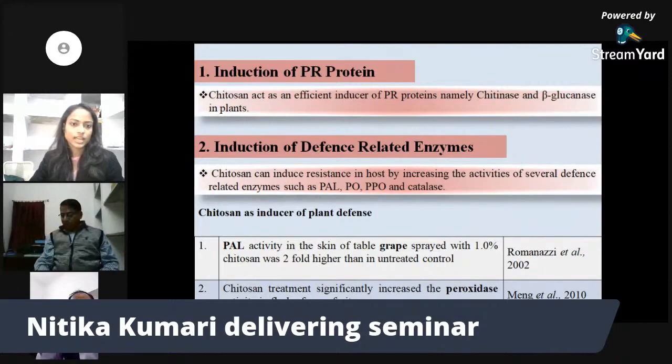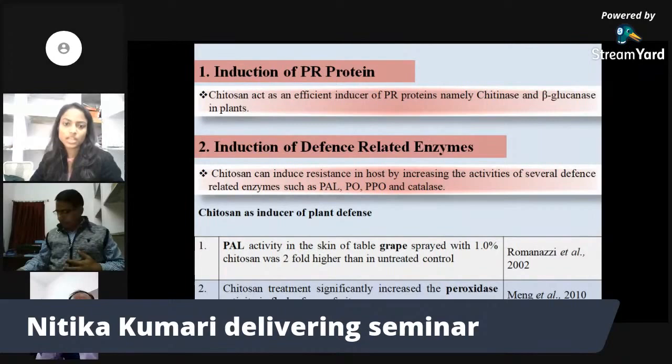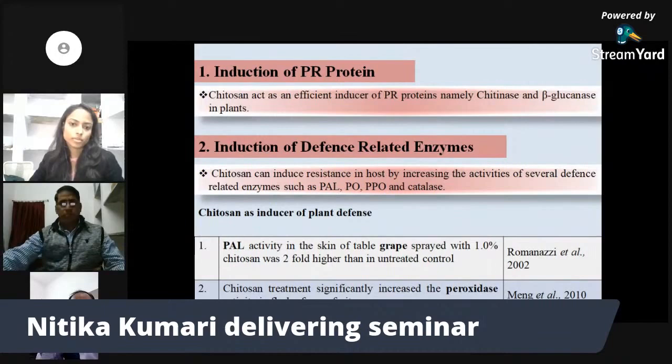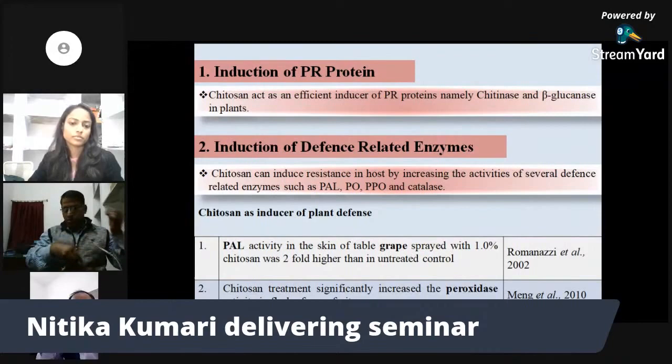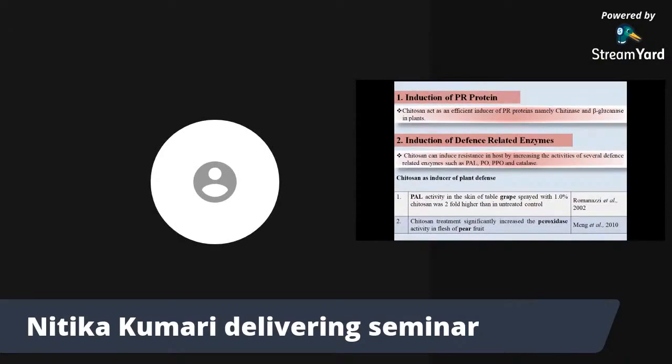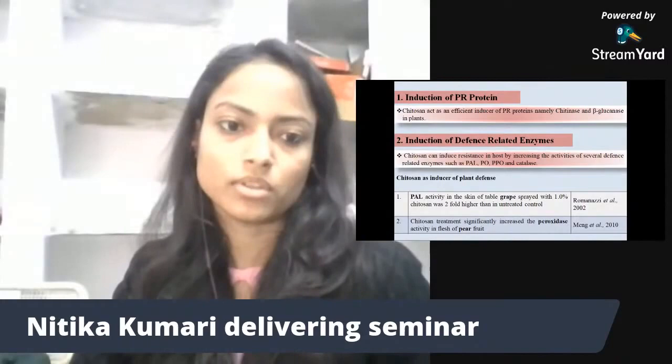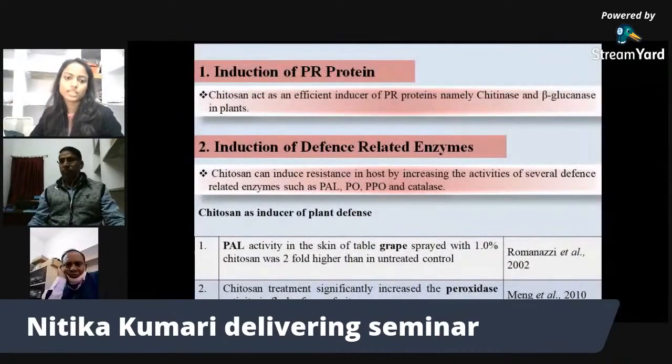Induction of defense-related enzymes: Chitosan can induce resistance in hosts by increasing the activity of several defense-related enzymes such as PAL (phenylalanine ammonia-lyase), peroxidase, polyphenol oxidase, and catalase. When skin was sprayed with a 1% solution, PAL activity was two times higher than the untreated control, while peroxidase activity was also significantly increased when treated with Chitosan.